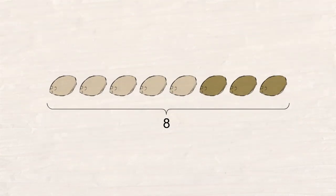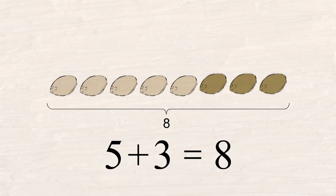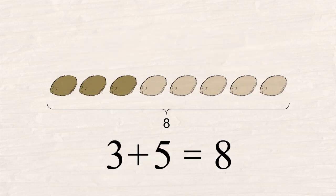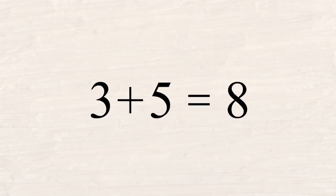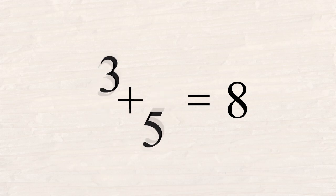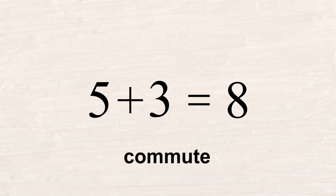For some reason, five plus three gives you the same answer as three plus five. Eventually, we figured out that it doesn't matter in which order you acquire your coconuts, you still end up with the same number of coconuts. Since the two numbers on either side of the addition symbol can switch positions without changing the answer, we say that they commute, since commute means to travel back and forth.